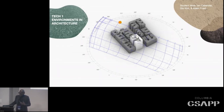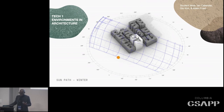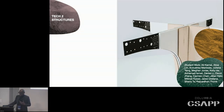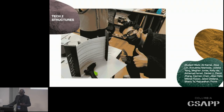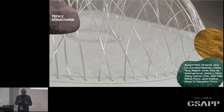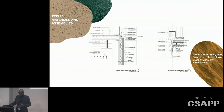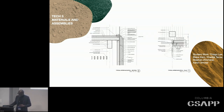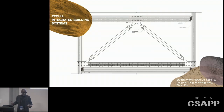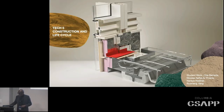Tech One — Environment in Architecture — addresses not only the environment in an abstract sense, but also environments in terms of embodiment and thermal comfort. Tech Two is about structures — thinking about the relationship between materials and how they go together, their relationship to gravity, and how they come together in terms of materials and assembly. If architecture is the materialization of concept, how do you construct a concept — not just theoretically, but how does that translate to actual construction and the lifecycle of materials in Tech Five?